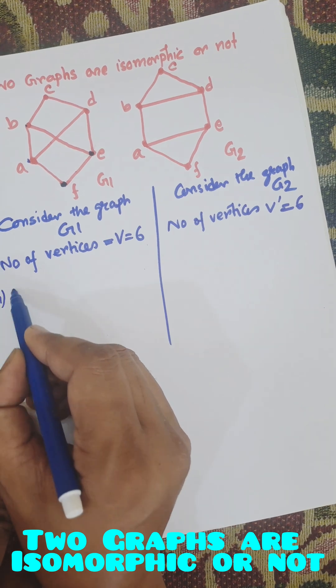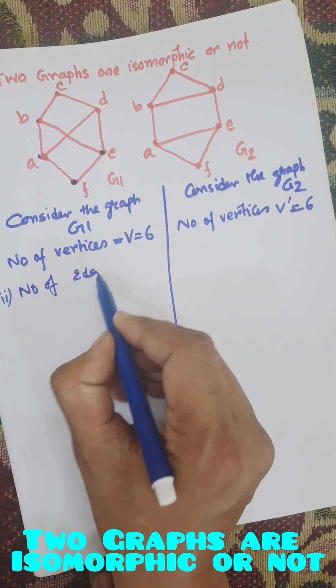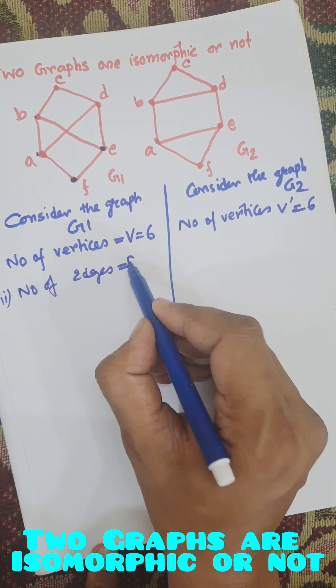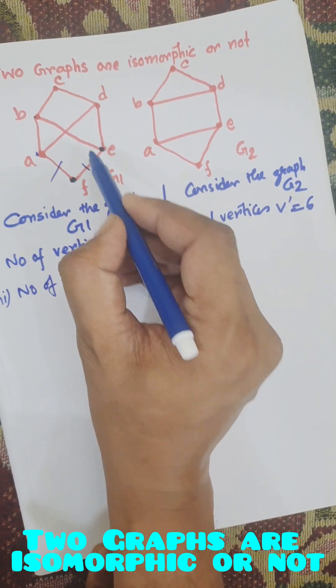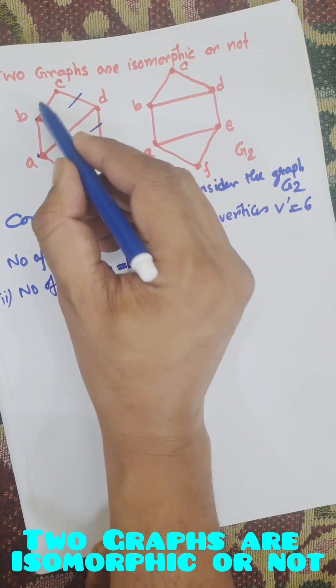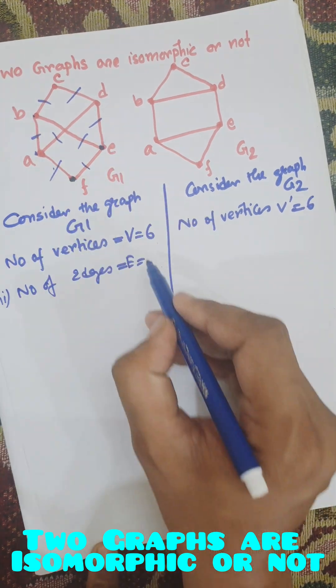Number 2, number of edges E. 1, 2, 3, 4, 5, 6, 7, 8.